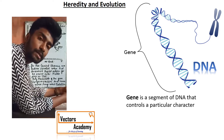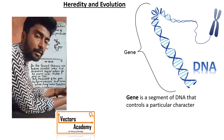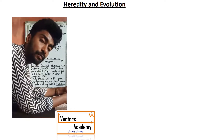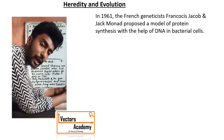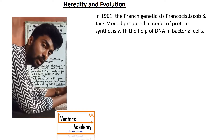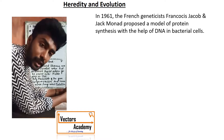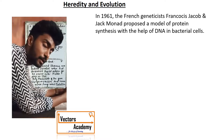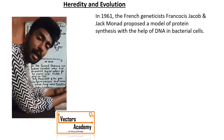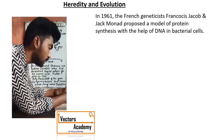Today we are going to study about transcription, translation, and translocation. Francis Jacob and Jack Monat were the first scientists who proposed the model of protein synthesis with the help of DNA in a bacterial cell. The structure of a double-stranded DNA was discovered by James Watson and Francis Crick.